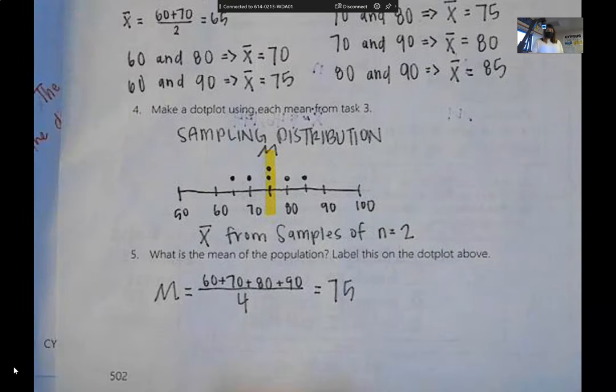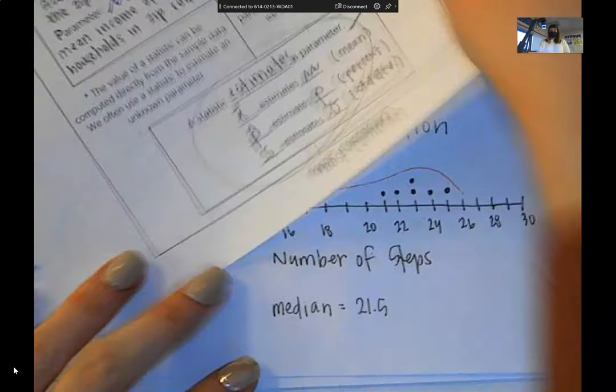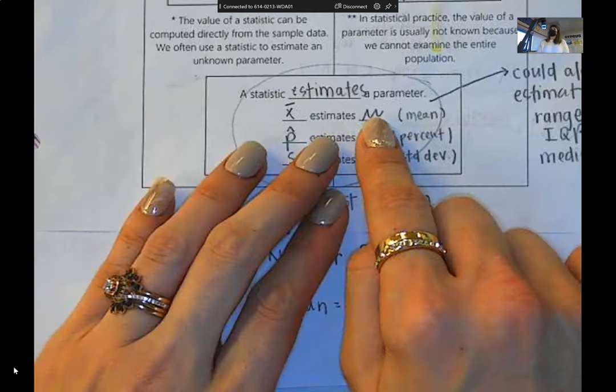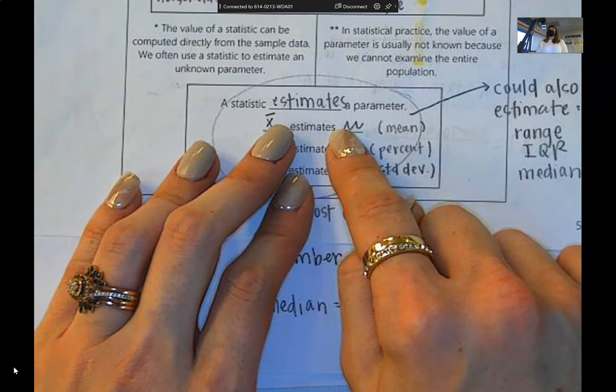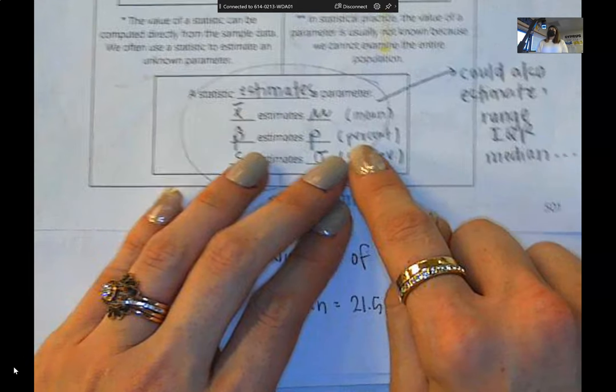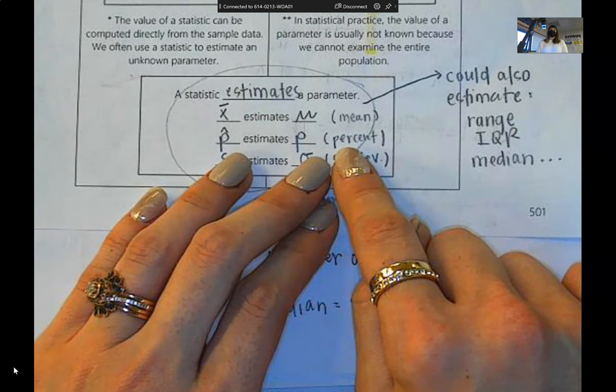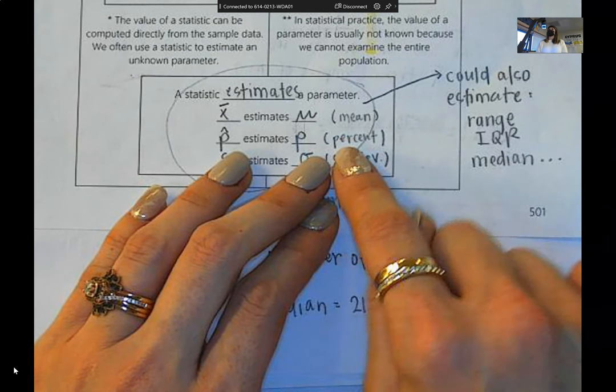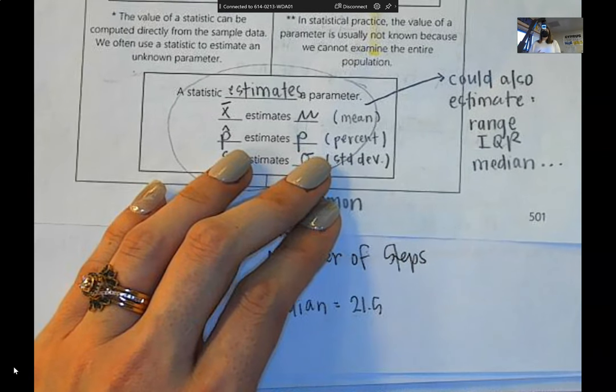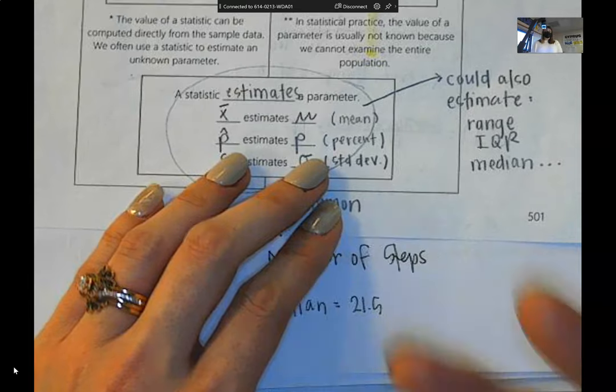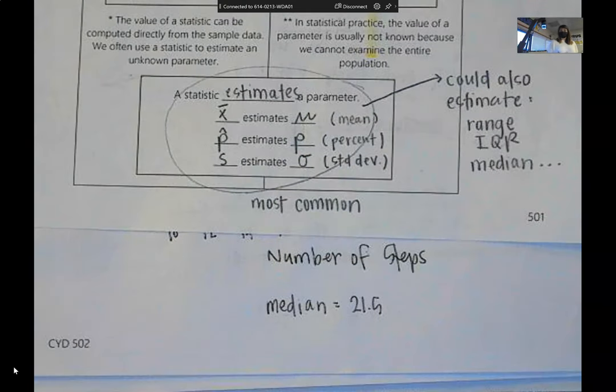So the biggest takeaways from last time are we wanted to estimate the average value of something for a population. In order to do that, we can take a sample and just calculate their average. Why can we do this? Because of this thing called the sampling distribution. So we discussed that this is not the only thing we can estimate. We don't just want to know the mean of a population. We might want to know a proportion or a percent from the population or range, IQR, median.